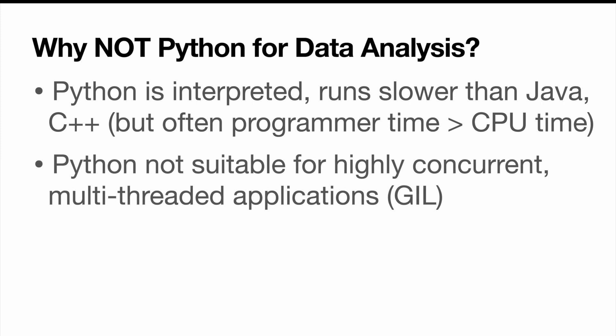However, Python is also not very suitable for highly concurrent or multi-threaded applications. The reason for that is something called the GIL, the Global Interpreter Lock, which is a mechanism that prevents the interpreter from executing more than one Python instruction at a time. So if we have some kind of code that would be highly concurrent, then Python is not the best choice.